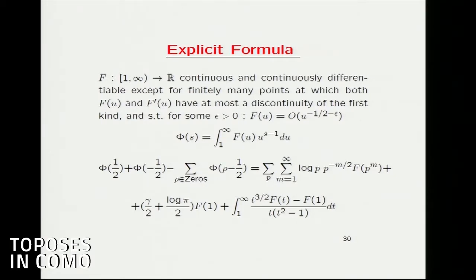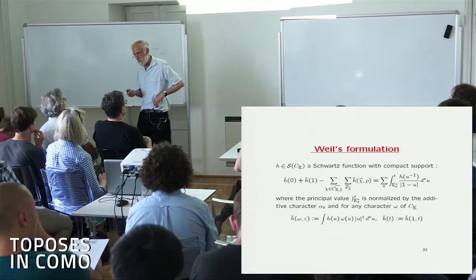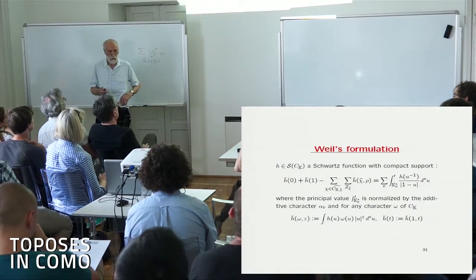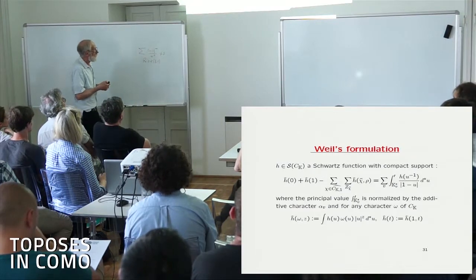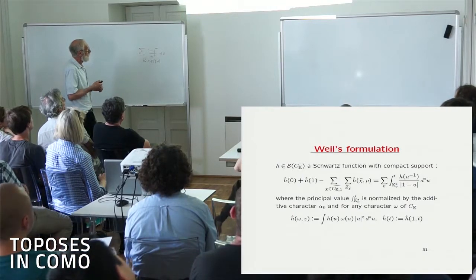As it is, it doesn't look very promising. But thanks to André Weil, who had a much better way of writing the explicit formulas — he wrote them in terms of Adeles and for an arbitrary global field. K is what is called a global field: a field which has a parent that is a locally compact ring, called the Adeles. It sits inside the Adeles in a way which is discrete and co-compact. And it is beautiful that Weil was able to rewrite the explicit formulas for an arbitrary global field.